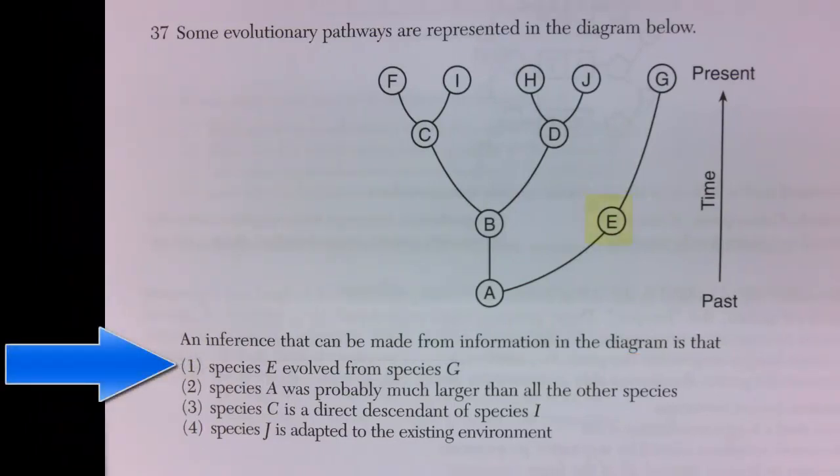Let's look at one. Species E evolved from species G. If you look at where species E is in the diagram, it is in the past before species G. So species E could not have evolved from species G.